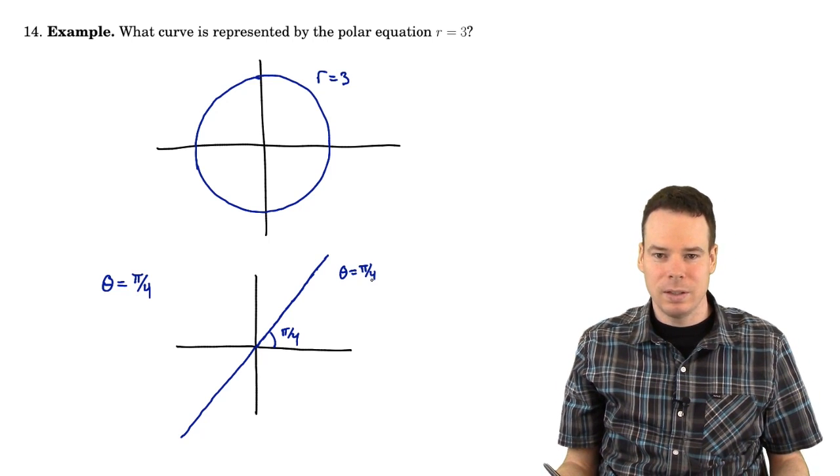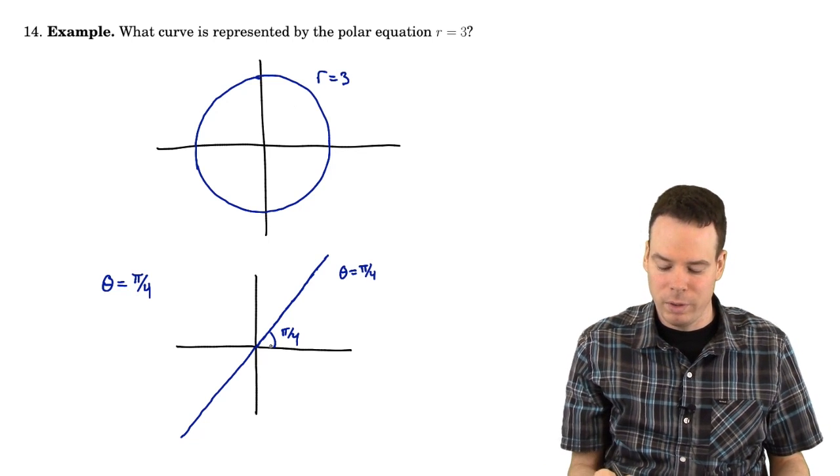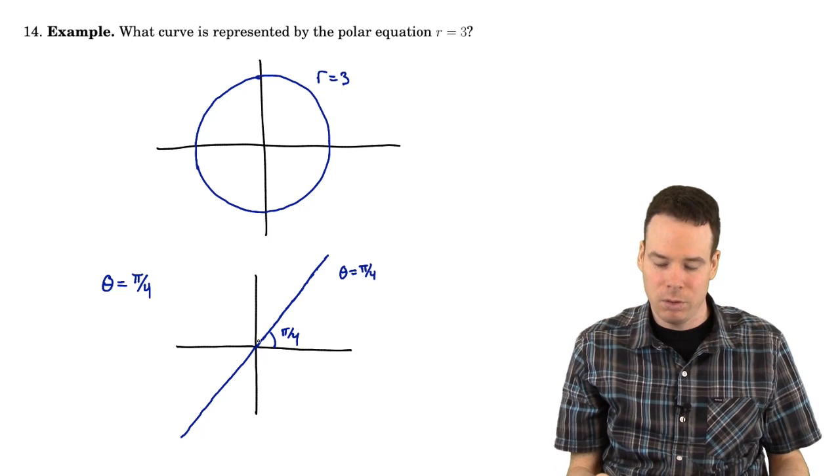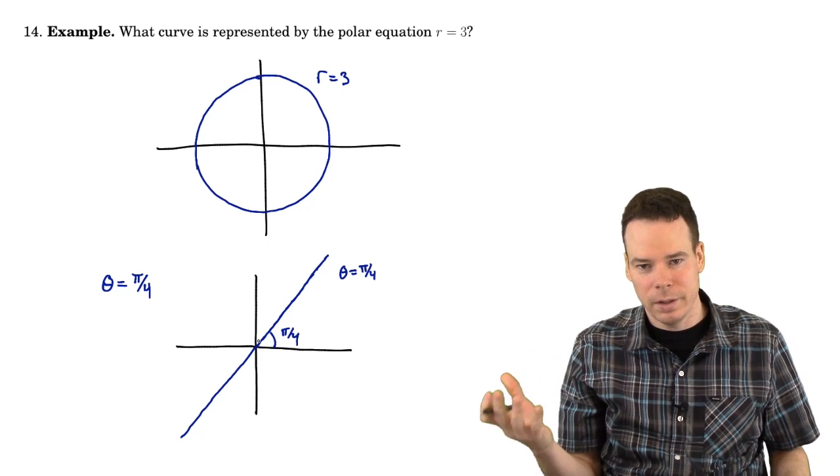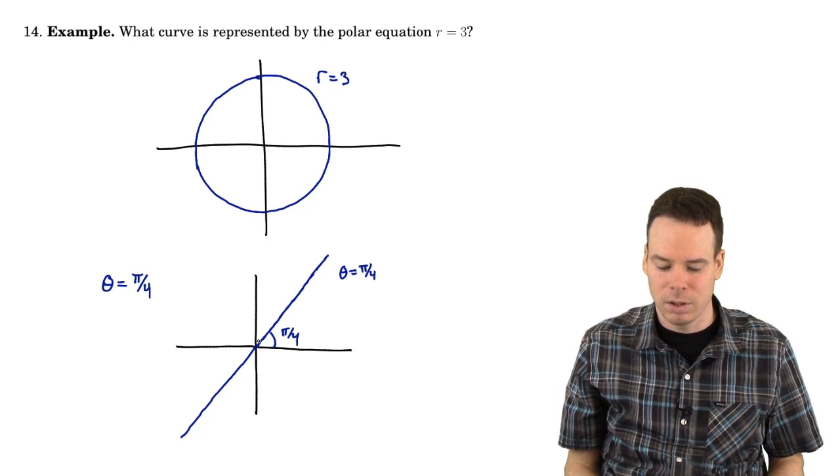So the basic objects in this coordinate system are when r is constant, it's a circle. When theta is constant, it's a straight line through the origin. So lines through the origin and circles are the basic objects in the Cartesian coordinate system.